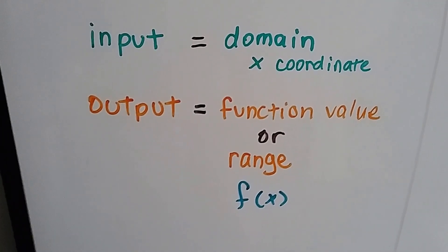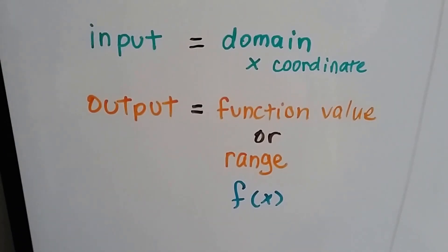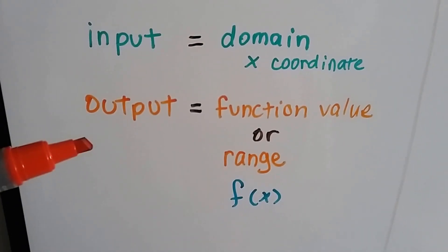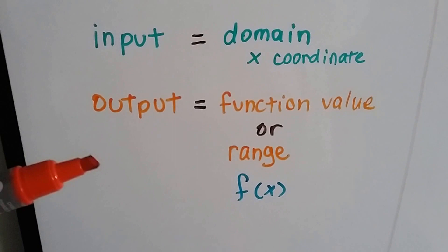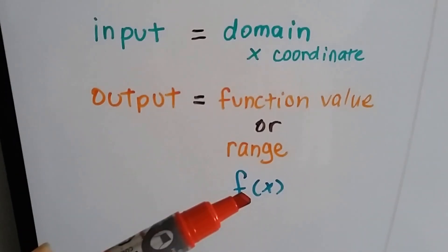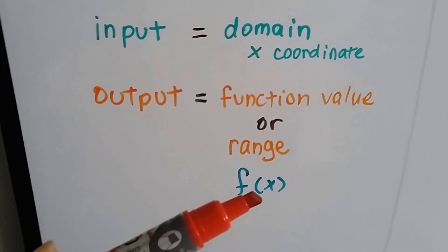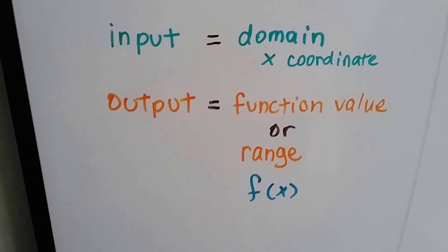The input is the domain, also the x coordinate. The output is the function value, the range, also f(x). It's what we think of as the y value on a coordinate plane.